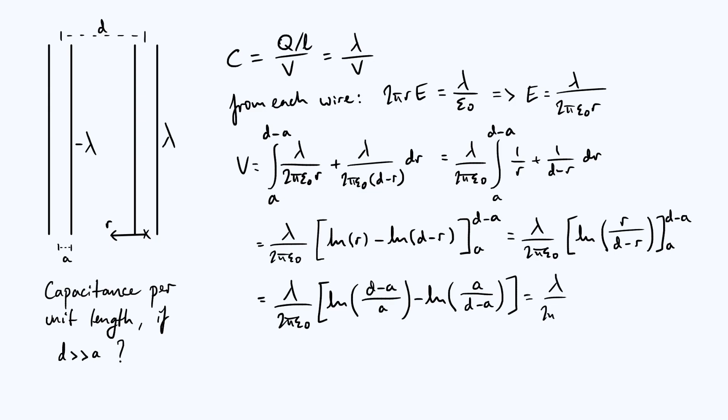Now I'm going to use the same law of logs where you divide the arguments, so you can combine these into a single log. It's lambda over 2 pi epsilon 0 natural log of—you're going to divide all of this by all of this, but those are reciprocals of each other. So if you do (d minus a) over a divided by a over (d minus a), that is just going to give you (d minus a) over a all squared. So we can put log of (d minus a) over a all squared, and then use yet another law of logs to pull down this power as a pre-factor. So your potential difference V is now just lambda over pi epsilon 0—there is no 2 anymore because we brought down the power from the log—lambda over pi epsilon 0 natural log of (d minus a) over a.